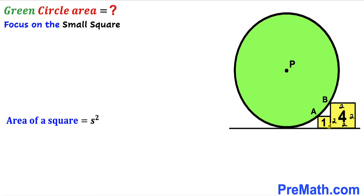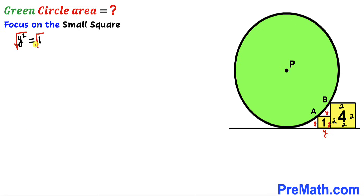Now we focus on the small square. Labeling its side length as y, all four sides are y. We know the area of the small square is 1, so y squared equals 1. Taking the square root of both sides, y equals positive 1 unit. The side length of the small square is 1 unit.